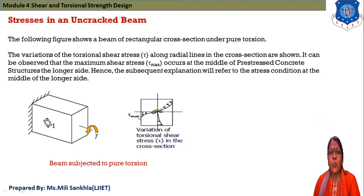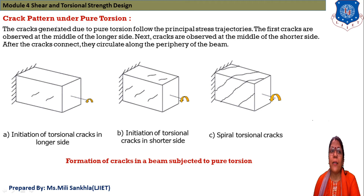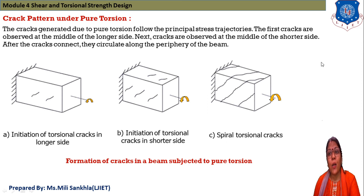When torsion is applied, the maximum shear stress will be at the longer side. This middle portion section is represented, and because of this shear stress, the section is subjected to torsion. This is the torsional shear stress in the cross-section of the beam. For crack pattern under pure torsion, cracks generated due to pure torsion follow the principal stress trajectories. First cracks are observed at the middle of the longer side.